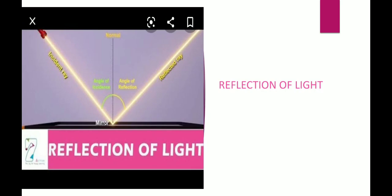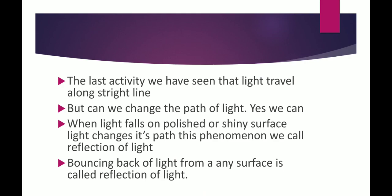Next, reflection of light. What is reflection of light? In the last activity, we have seen that light travels along a straight line. Can we change the path of light, dear students? Yes, we can. How? When light falls on polished or shiny surface, light changes its path. This phenomenon, we call reflection of light.